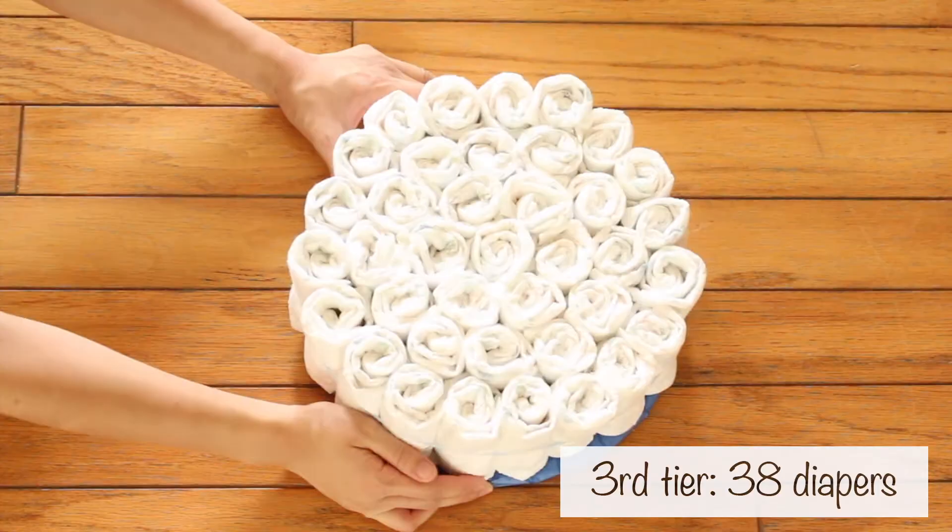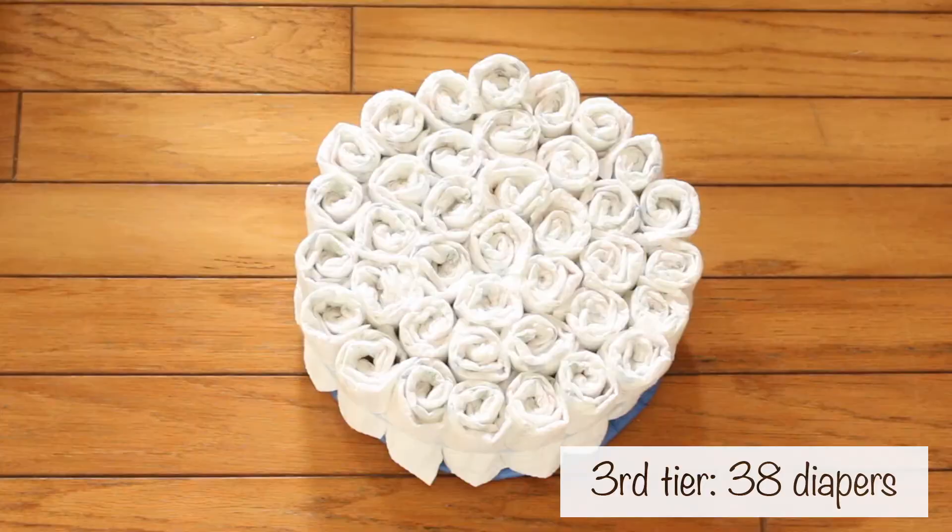For the 2nd tier, do 2 rounds and add a rolled diaper to the center. For the 1st tier, create 1 round and add a rolled diaper to the center.